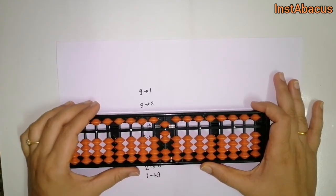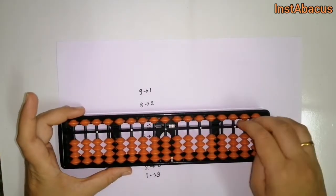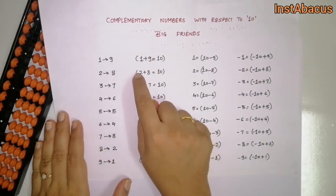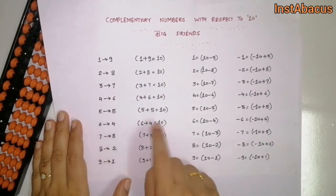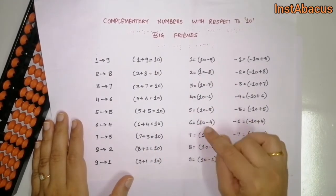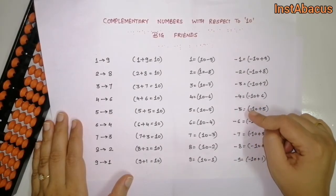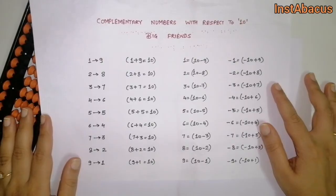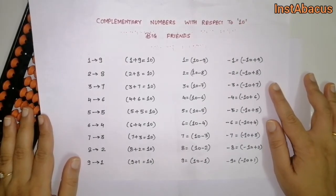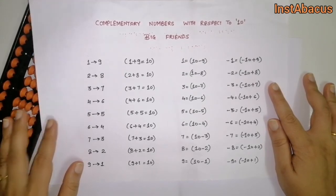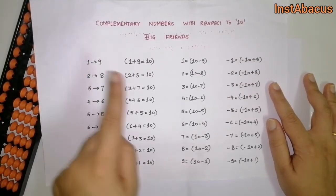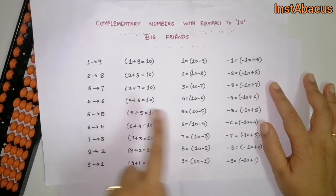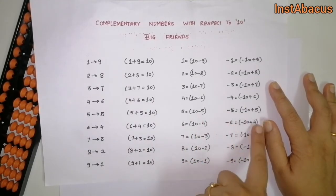There is one table I can show you — I have made this for you all. These are the complementary numbers. They are complementary because they sum up to 10. This is the format in which we use them for addition, and this is the format for subtraction. Don't be scared by the table — you don't have to memorize it, just understand what is to be done and why. For addition, we use it in the form of 10 minus the complementary number; for subtraction, minus 10 plus the complementary number.